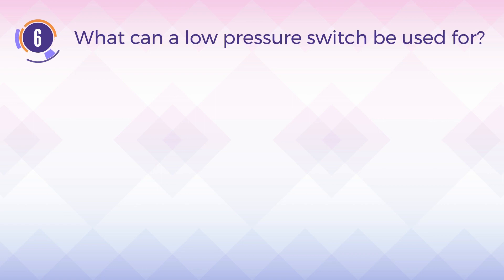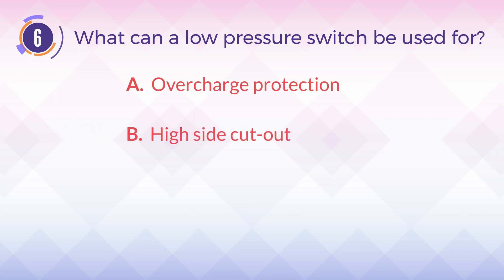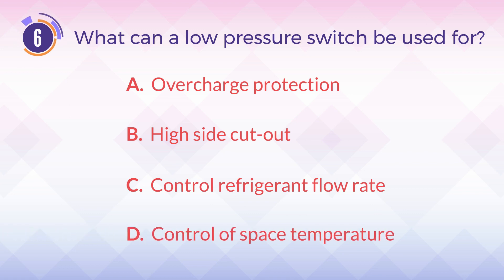Number six: what can a low pressure switch be used for? A) overcharge protection, B) high side cutout, C) control refrigerant flow rate, D) control of space temperature.